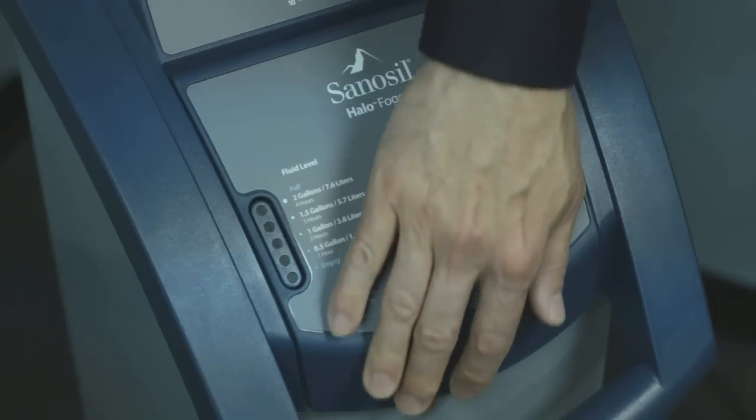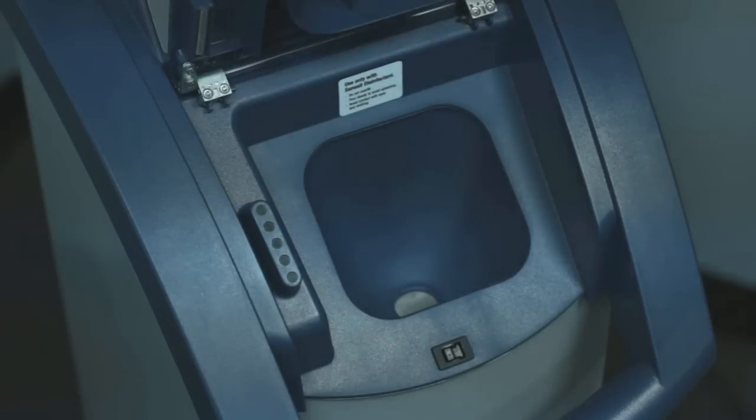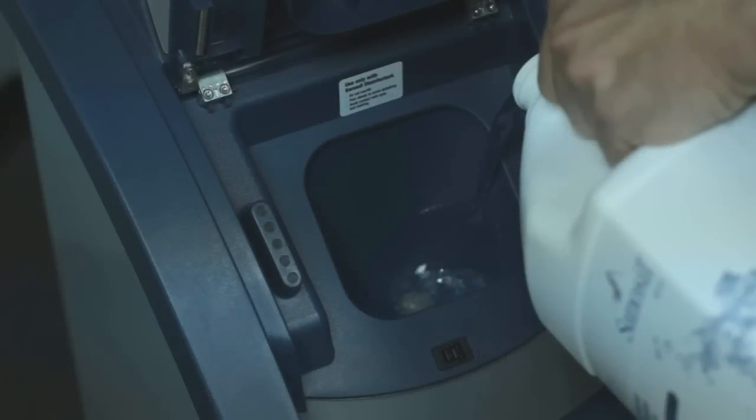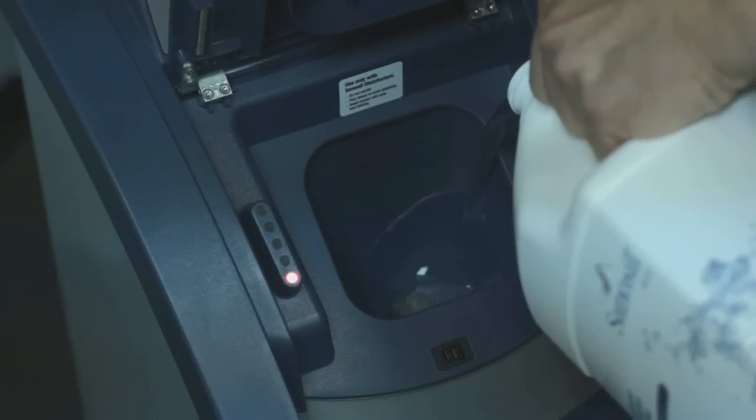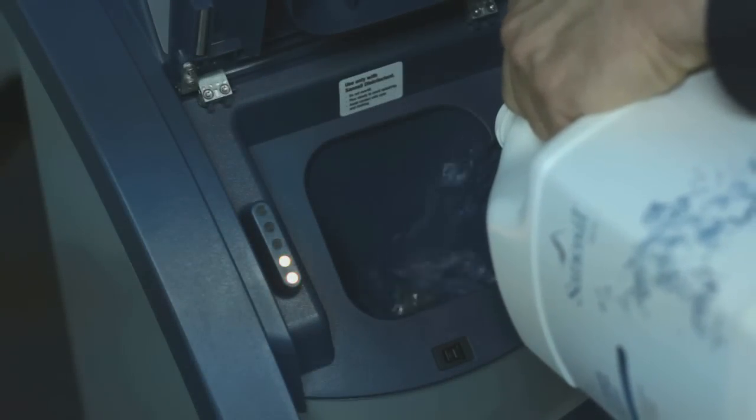To add fluid, press down on the reservoir door, then lift to expose the filling funnel. Open a gallon of Sanosil disinfectant and slowly pour the contents into the funnel to avoid splashing. The fluid level indicator lights will illuminate to show how much disinfectant is in the unit.